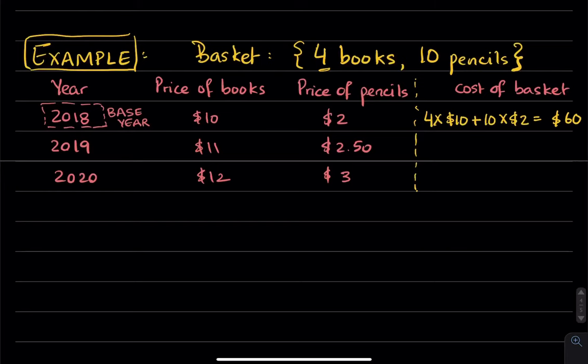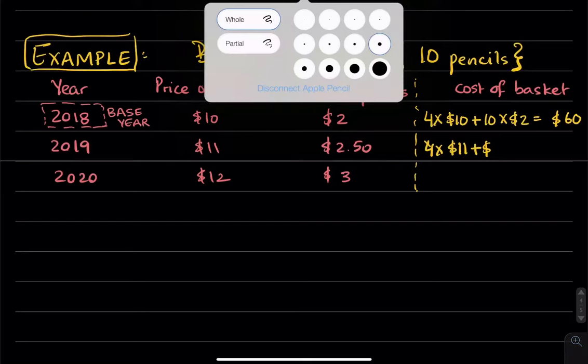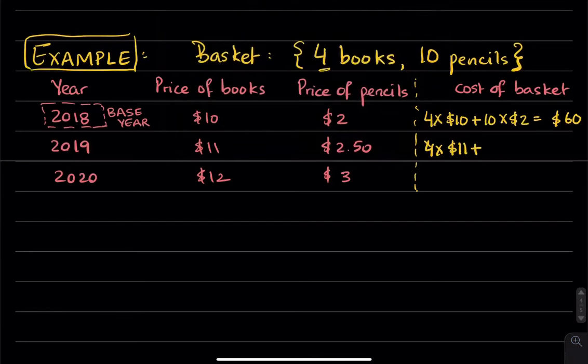Next, we turn to 2019. You're going to do the same thing. Four books times $11, plus ten pencils times $2.50, and this equals $69.